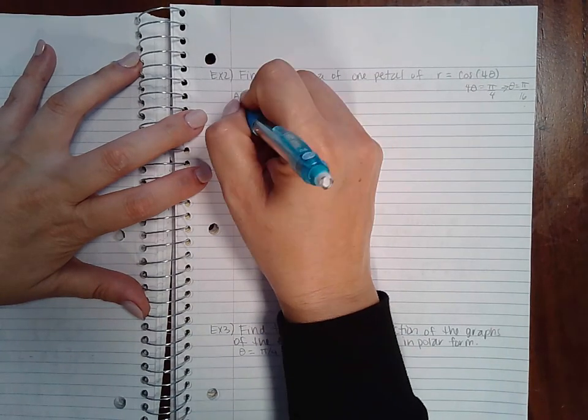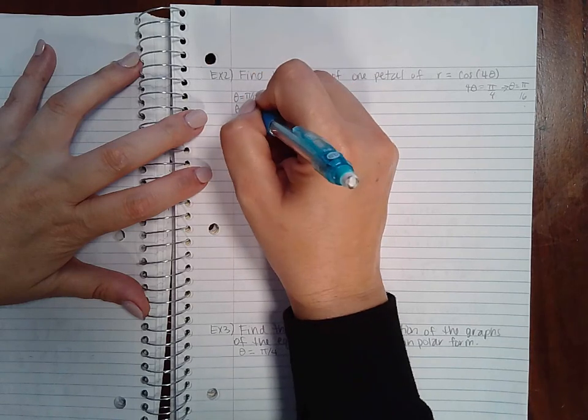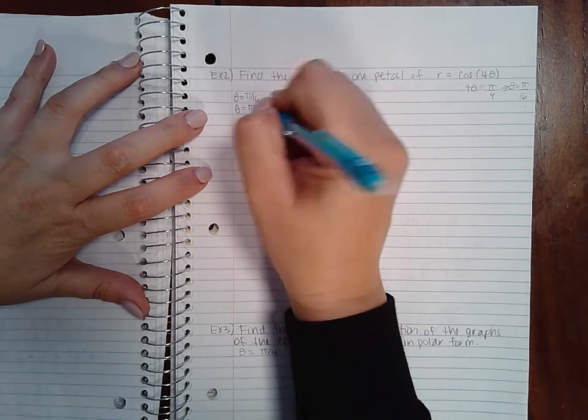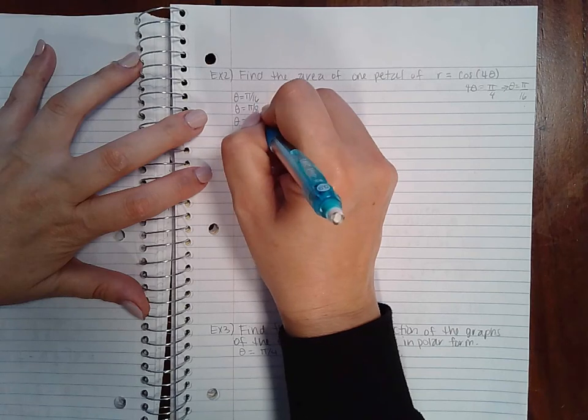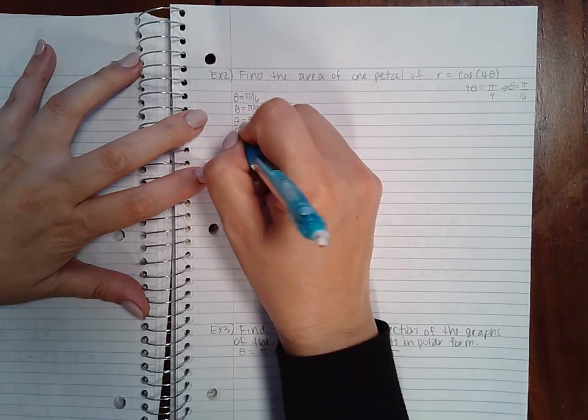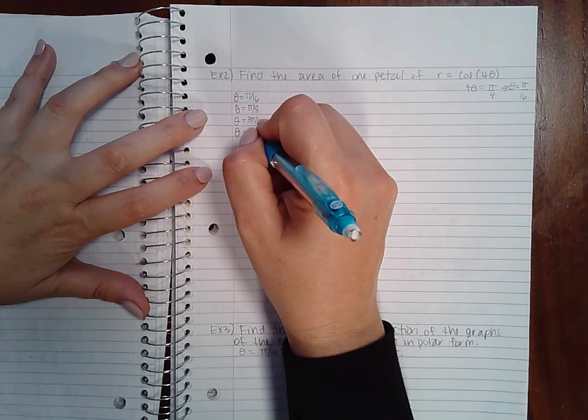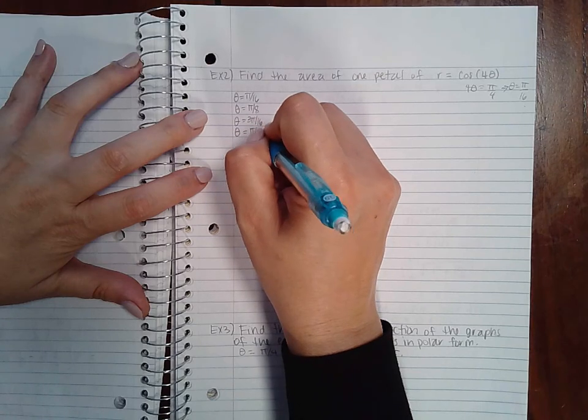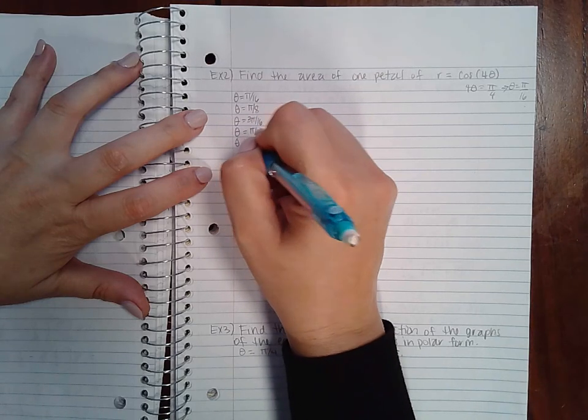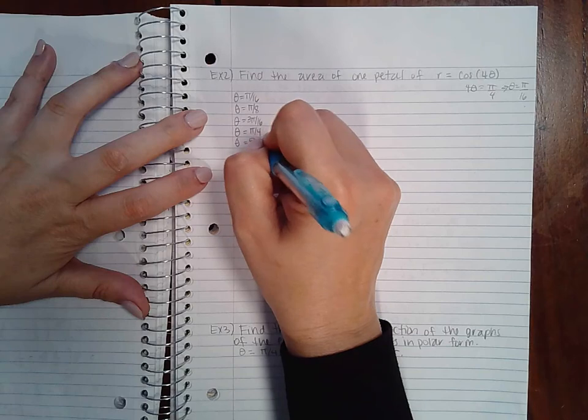Theta equals 2 pi over 16, which is pi over 8, 3 pi over 16, which doesn't reduce, 4 pi over 16, which is pi over 4, 5 pi over 16, which doesn't reduce, and I'll stop there unless I need to keep going.